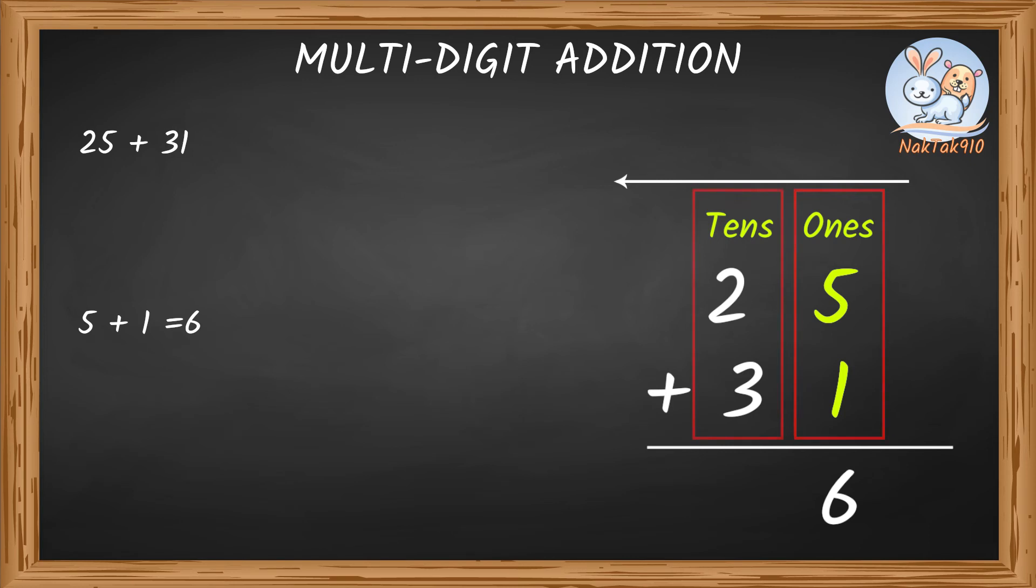Now, let's move towards left to the tens place column. Tens column, we have two and three, which makes it five. Put that in the tens place. So, 25 plus 31 gives us 56.